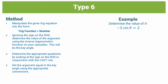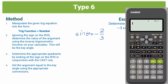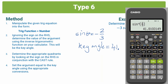Let's do an example. We are told to determine the value of theta, and we have negative 3 sine theta equals 2, where theta is our unknown. Step 1: get into the form trig function equals number — divide throughout by negative 3, giving sine theta equals negative 2 over 3. Step 2: ignore the sign on the right-hand side. Using the calculator in degrees mode, I'll find sine inverse of 2 over 3 — ignoring the negative. That gives us 41.81 degrees, so our key angle is 41.81 degrees.